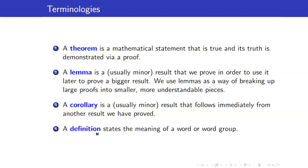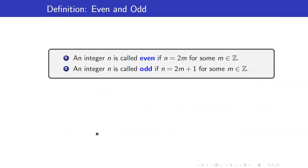A definition states the meaning of a word or word group. Here are the definitions we will be using for our proofs in this lecture. First, an integer n is called even if n equals 2 times some integer m. It is called odd if we can write it as 2 times an integer plus 1. Even means it can be written as a product of 2 and an integer; odd means it equals 2 times an integer plus 1.